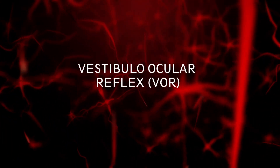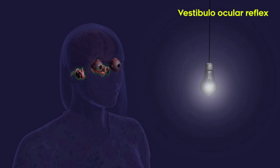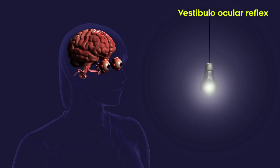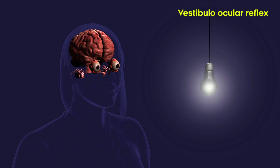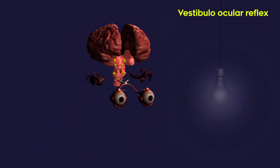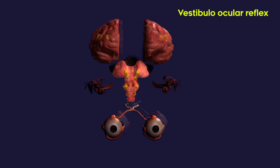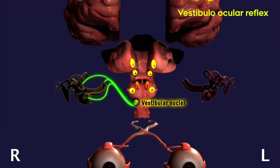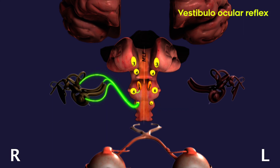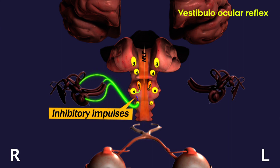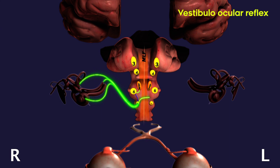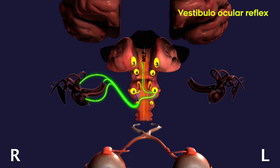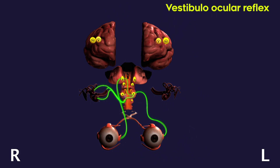Vestibulo-ocular reflex (VOR): the VOR holds the image on the retina during brief high-frequency rotations of the head, which occurs during walking. VOR is driven by the semicircular canals for angular movements and otoliths of the utricle and saccule for linear acceleration. Impulses from these structures pass along vestibular nerves to the vestibular nuclei in the medulla of the brain stem. The vestibular nucleus sends inhibitory impulses to the sixth nerve nucleus of the same side and excitatory impulses to the sixth nerve nucleus of the opposite side, causing deviation of eyes opposite to the side of head rotation. VOR is intact in supranuclear lesions.